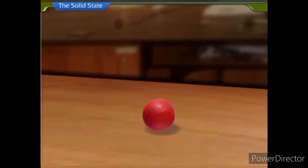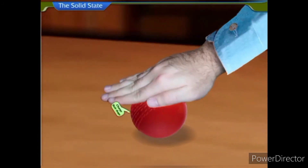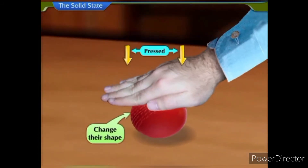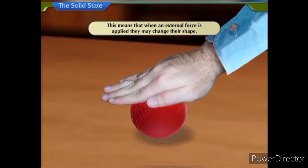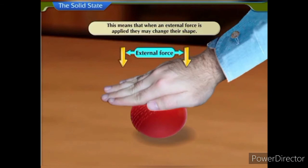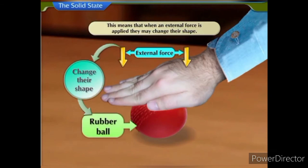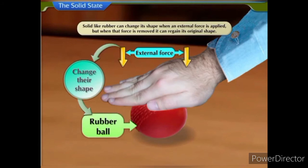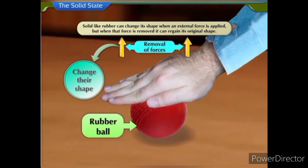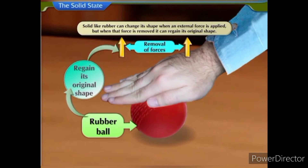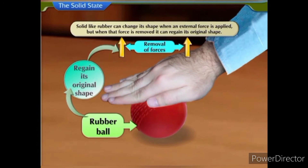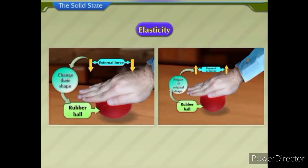However, there are some solids that change their shape when pressed. When an external force is applied, they may change their shape. Solids like rubber change their shape when an external force is applied, but when that force is removed, they regain their original shape. This property is called elasticity.